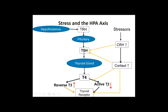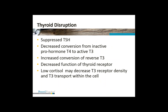High cortisol suppresses thyroid production, increases production of reverse T3, and decreases active T3. It also decreases the responsiveness of the thyroid receptor. When you get into chronic low cortisol, it also impairs thyroid function through other mechanisms: low cortisol means suboptimal thyroid receptor response, lower density of thyroid receptors, and poor absorption of thyroid hormone into cells. So whether you have chronic high or chronic low cortisol — or are fluctuating back and forth — abnormal cortisol levels disrupt thyroid function.